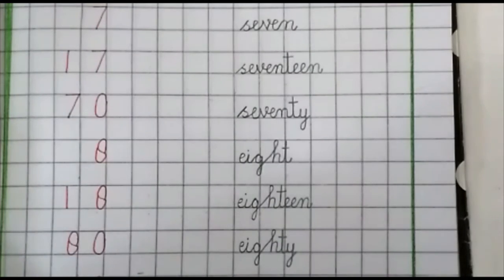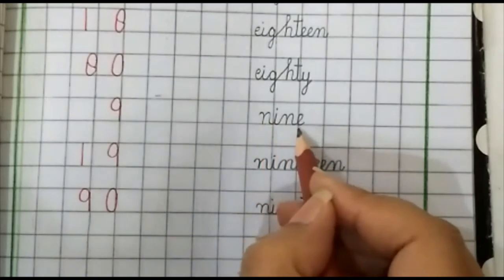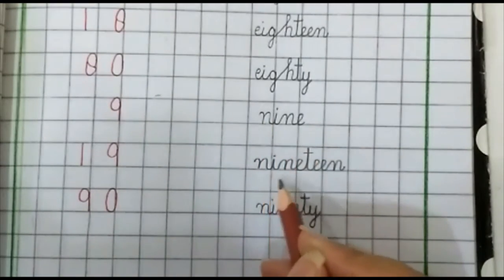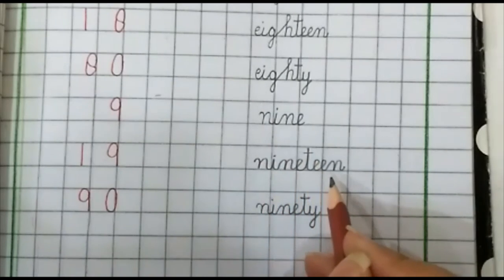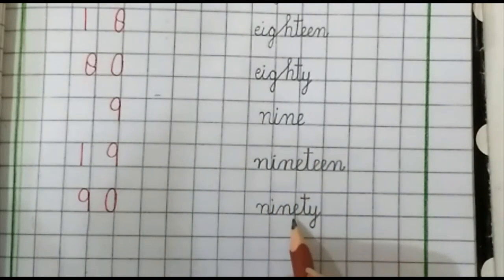Go to the next number prep class. N-I-N-E, nine. N-I-N-E-T-double E-N, nineteen. N-I-N-E-T-Y, ninety.